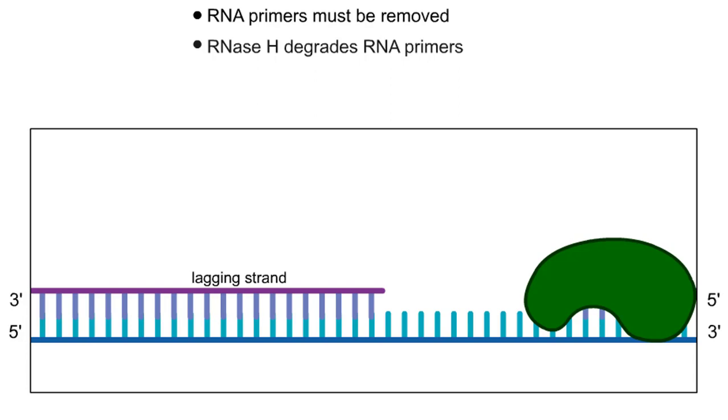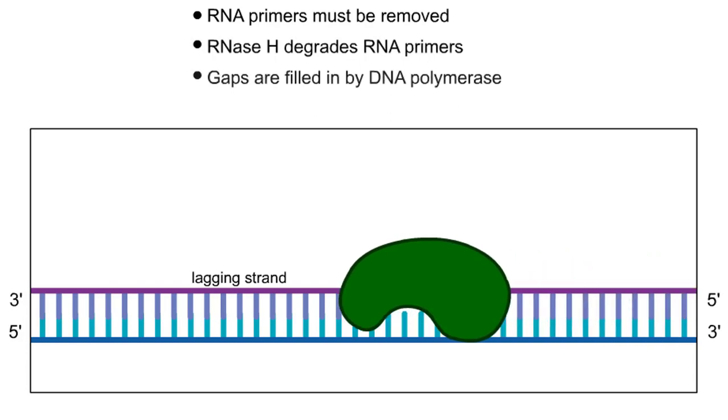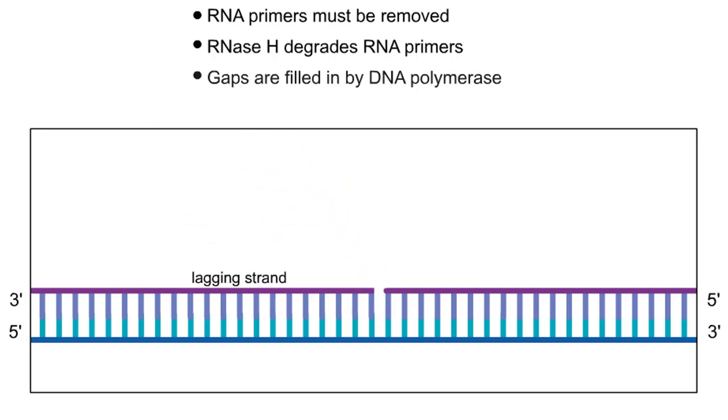Next, the sequence gap created by RNase H is then filled in by DNA polymerase, which extends the 3' end of the neighboring Okazaki fragment.